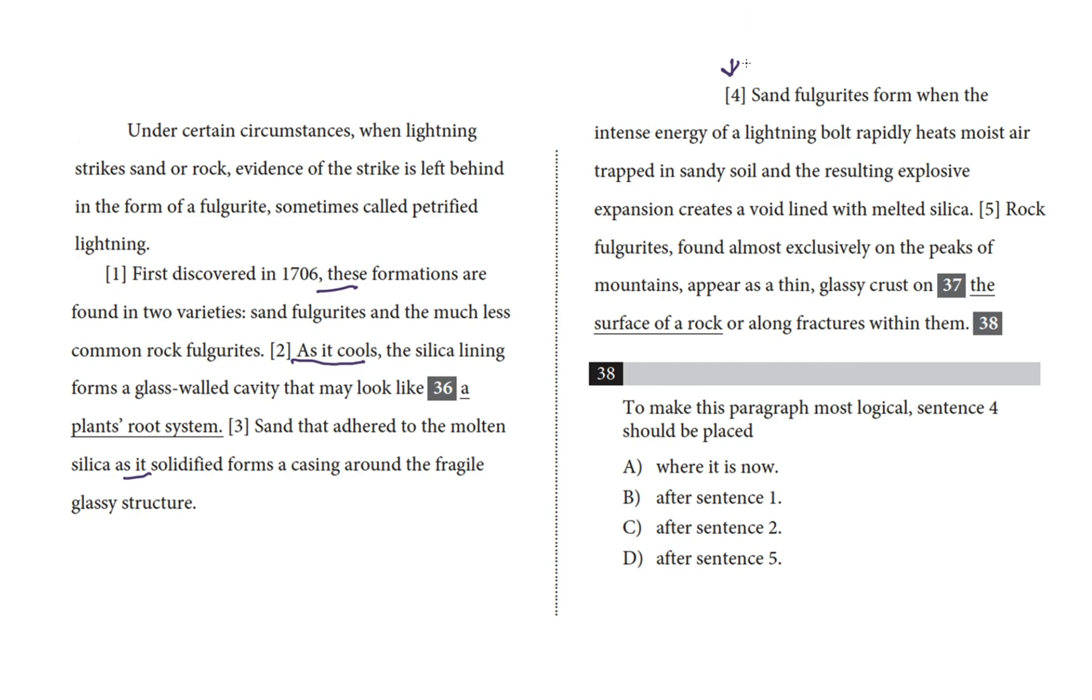Sand fulgurites form when the intense energy of a lightning bolt rapidly heats moist air trapped in sandy soil, and the resulting explosive expansion creates a void lined with melted silica. Rock fulgurites, found almost exclusively on the peaks of mountains, appear as a thin, glassy crust on the surface of a rock or along fractures within them.